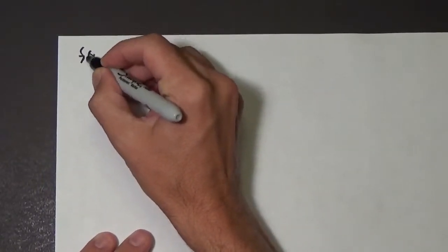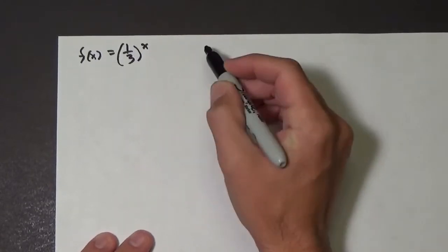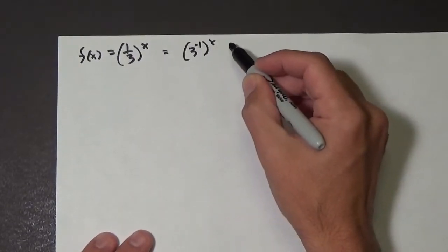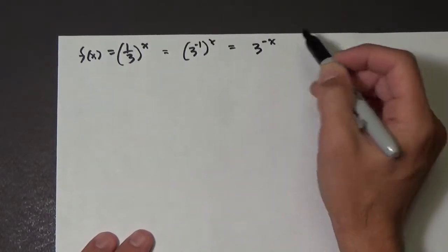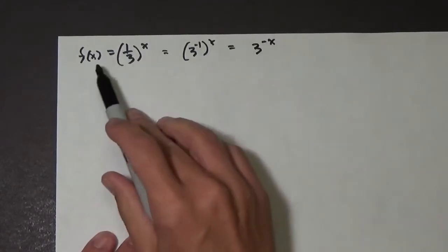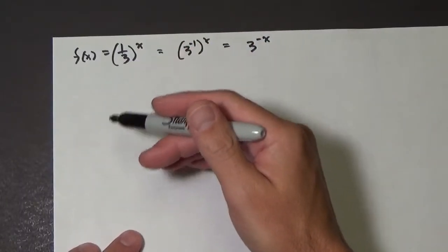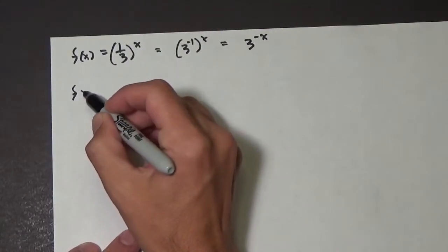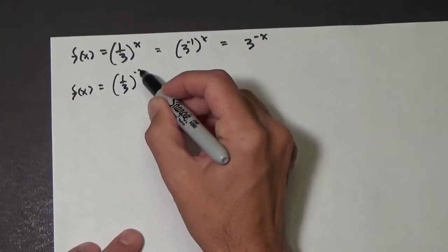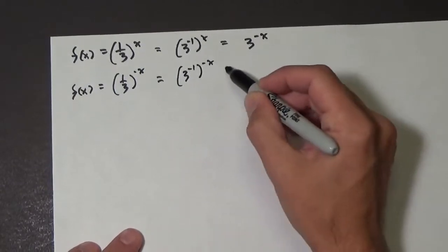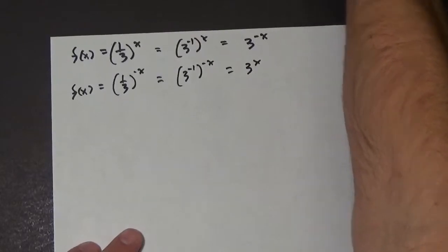Now there are two other versions of this. If we had f of x equals 1 third to the x, well this is the same as 3 to the negative 1 to the x, which is the same as 3 to the negative x. So f of x equals 1 third to the x would be exactly the same graph. And then f of x equals 1 third to the negative x becomes 3 to the negative 1 to the negative x, which becomes 3 to the x — so that would look exactly the same as the original.